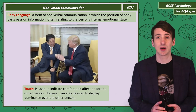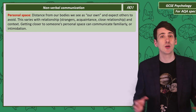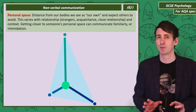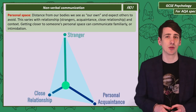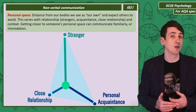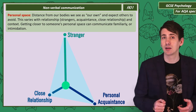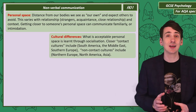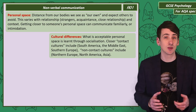Another aspect of body language is the distance we place our bodies from another person. We have an area around our bodies we see as our own personal space and expect others to avoid it. How close we're happy for others to get depends on our relationship with them — strangers are furthest away, then acquaintances, then close relationships the closest. Entering someone's personal space can indicate familiarity or intimidation. As we learn personal space from socialisation, there are significant cultural differences in acceptable personal distance.